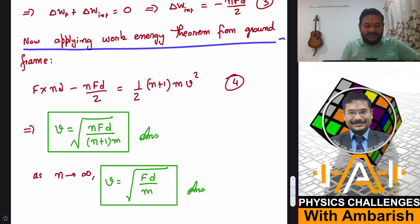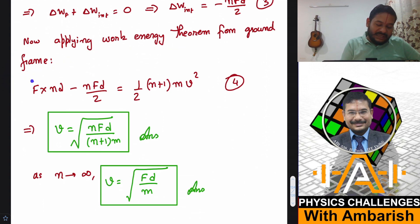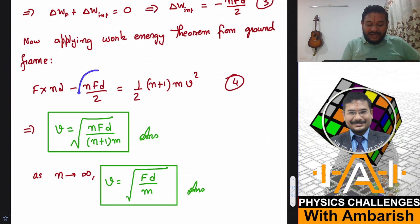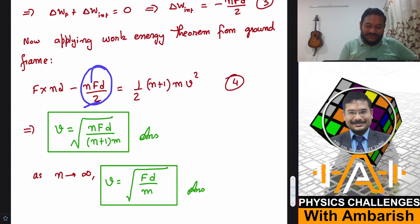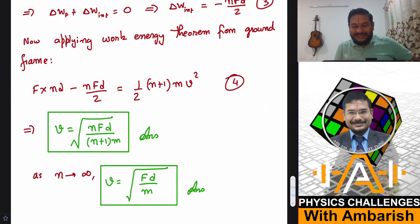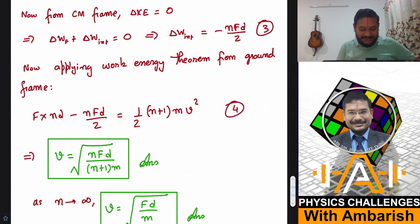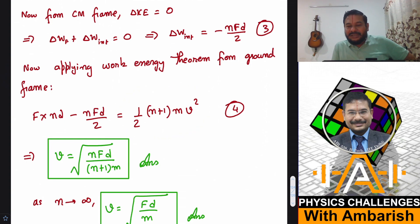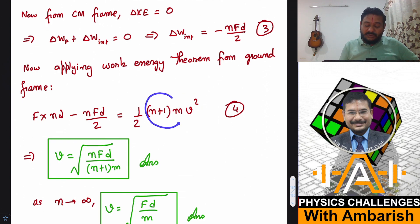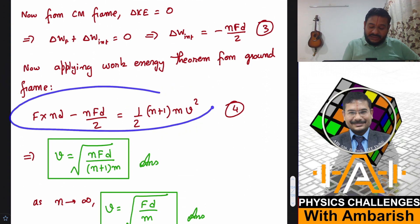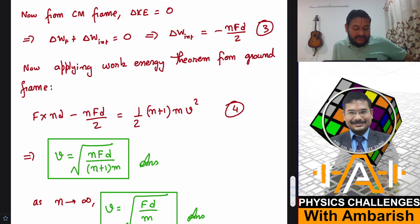Now applying the work-energy theorem from the ground frame: the displacement is n times d, so work done by external force F is F times n d. Work done by internal forces is frame-independent, so it's still minus F n d by 2. This equals the change in kinetic energy from the ground frame; initial KE was zero and final KE is half times (n+1) m times v squared. Rearranging, we get the velocity v equals the square root of n F d divided by (n+1) m.